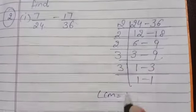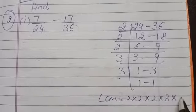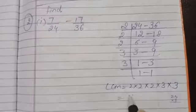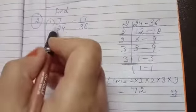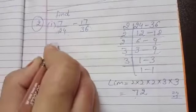So your LCM is: 2, 2's are 4, 4, 2's are 8, 8, 3's are 24, 24, 3's are 72. Here the LCM is 72. Now we have to make their denominator 72.